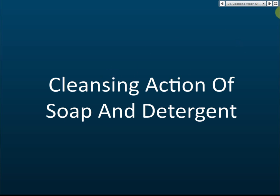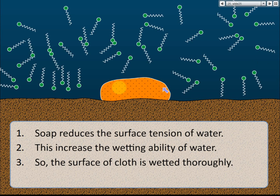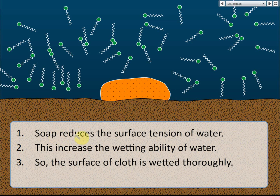Let's look at the cleansing actions of soap and detergents. Say this is the fabric, the surface of a cloth, and on the surface there is some dirt — let's say this is grease. Soap reduces the surface tension of water, which increases the wetting ability of water, so the surface of the cloth is wetted thoroughly. That is the first step.